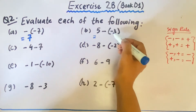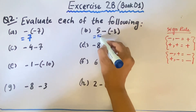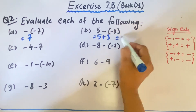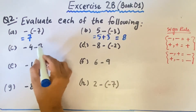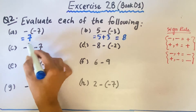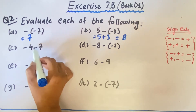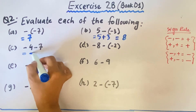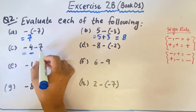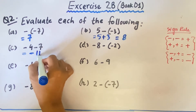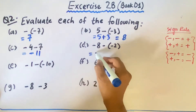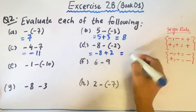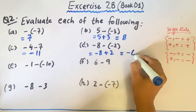In part B, again we open the bracket. 5 will remain the same. Minus, minus equals plus 3, and the answer will be 8. In part C, we are just solving the sign — minus, minus equals plus — so the sign of the bigger number will come and we add to get minus 11. In part D, minus 8, minus minus equals plus 2. The answer: minus plus minus gives minus 6.